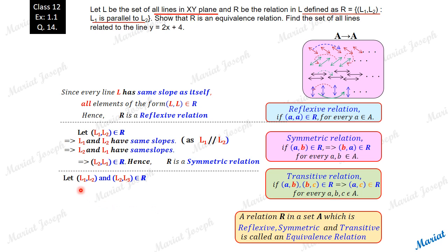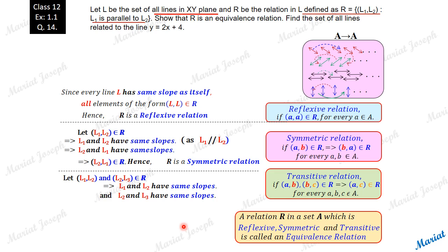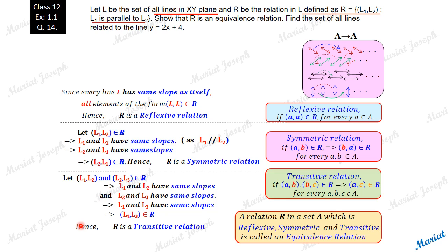Now let's consider two pairs: (L1, L2) and (L2, L3) both belonging to R, where L1 is related to L2 and L2 is related to L3. This implies L1 and L2 have the same slopes, and L2 and L3 have the same slopes, which implies L1 and L3 have the same slopes. So we can say (L1, L3) belongs to the relation. This satisfies the definition of transitive relation: whenever pairs (A, B) and (B, C) belong to the relation, the pair (A, C) should also be there. So this relation is transitive.